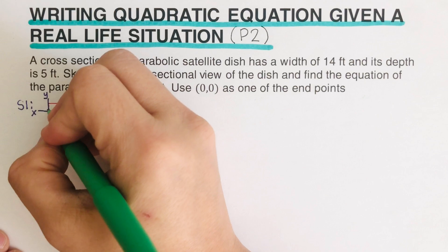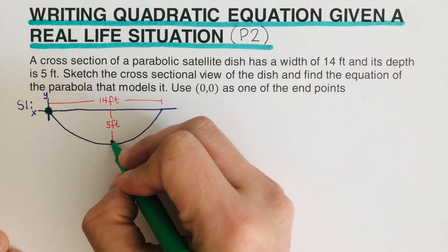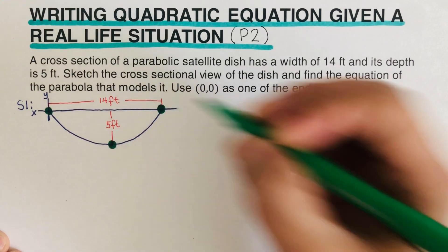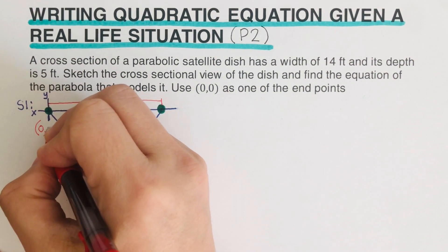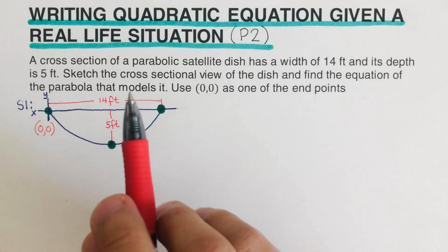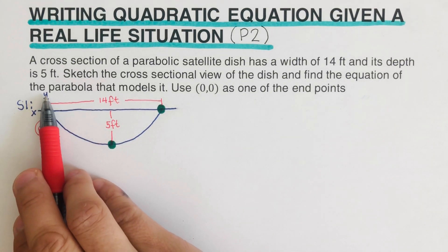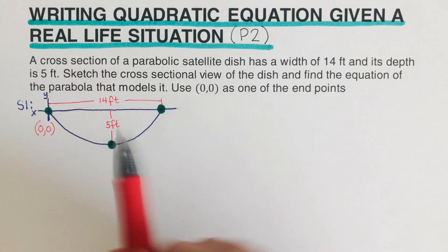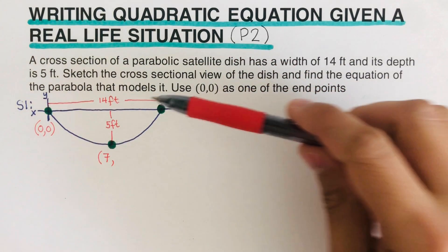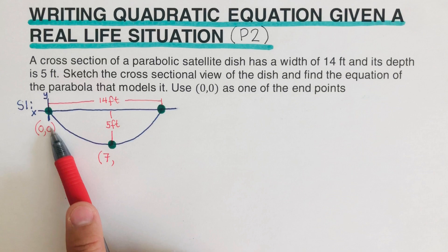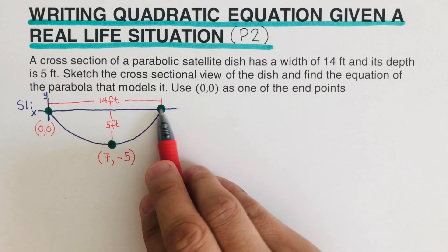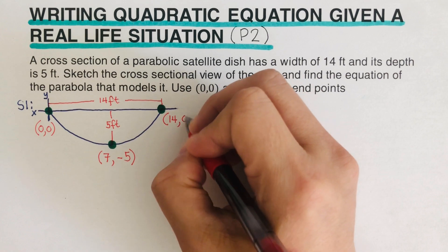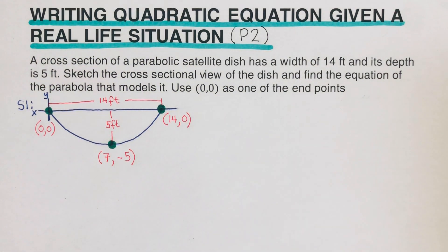Now we label the three points. The first point is at (0, 0) — the origin. The second point is the vertex: the x-value is half of 14, which is 7, and the y-value is −5 because it's on the negative y-axis. The third point has x = 14 and y = 0.